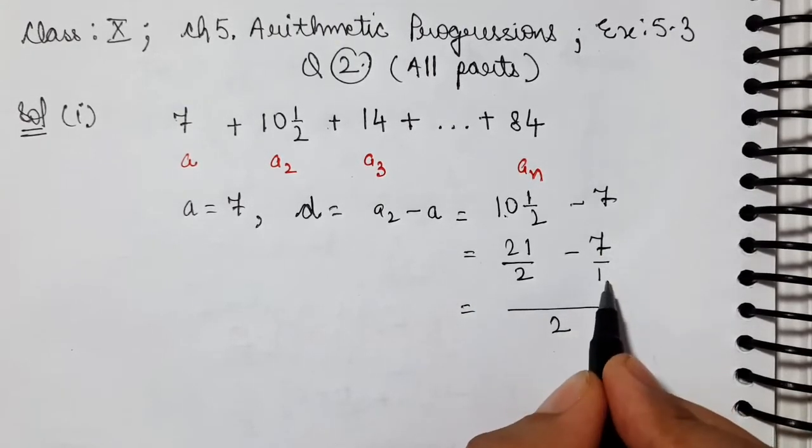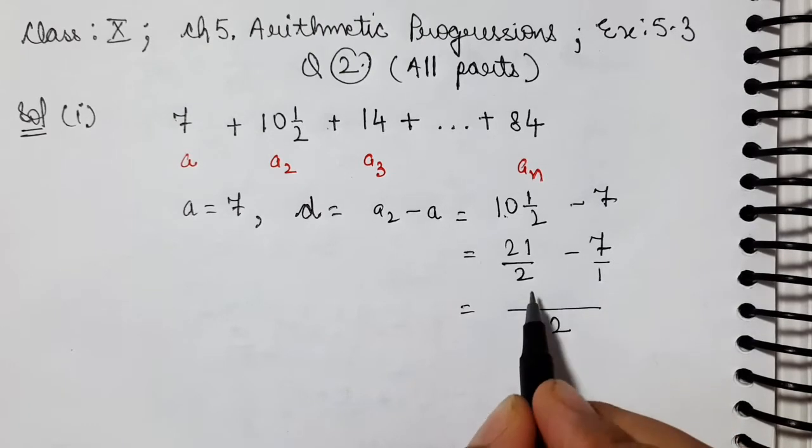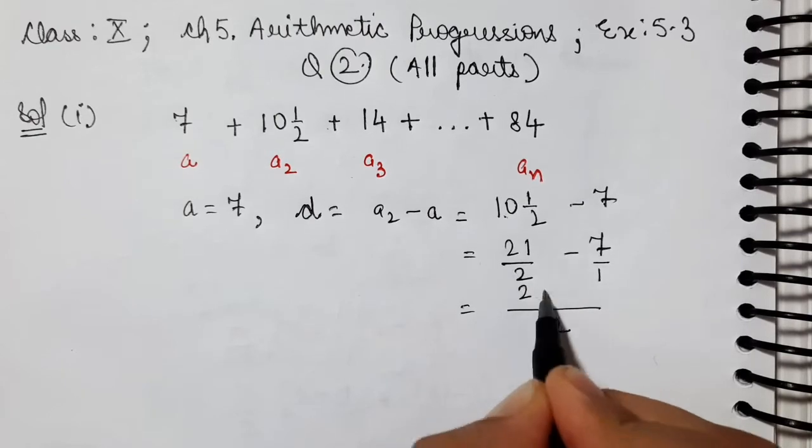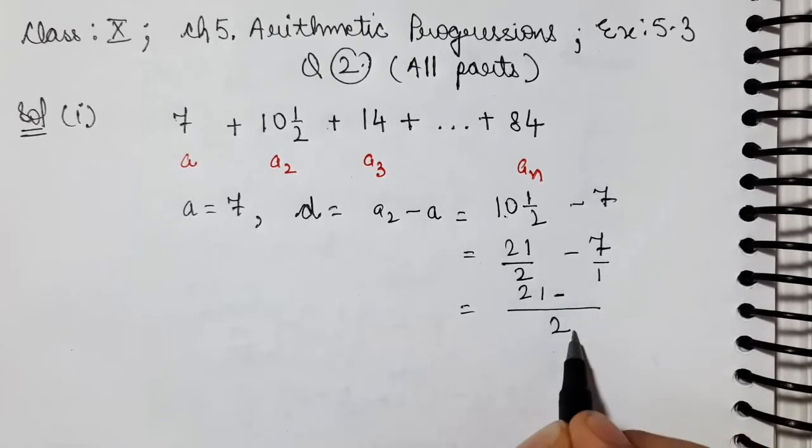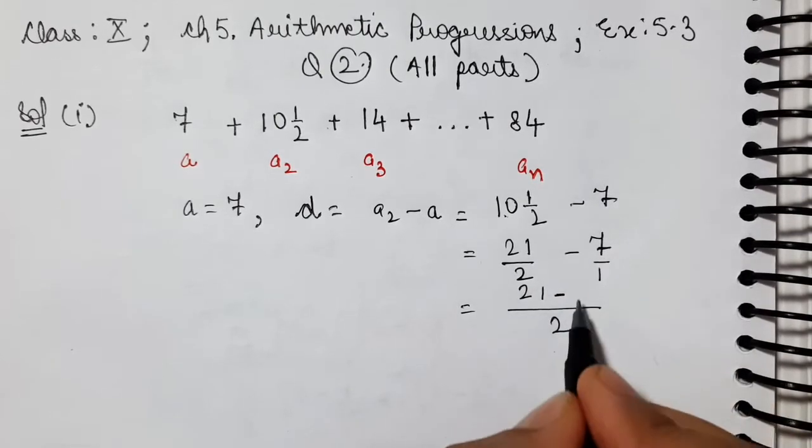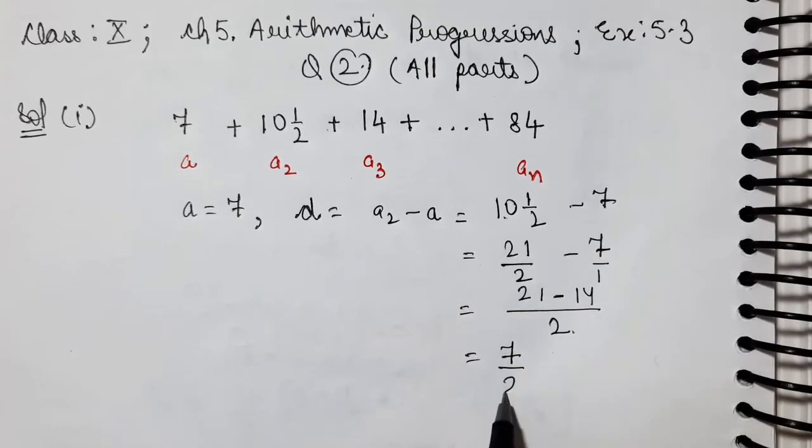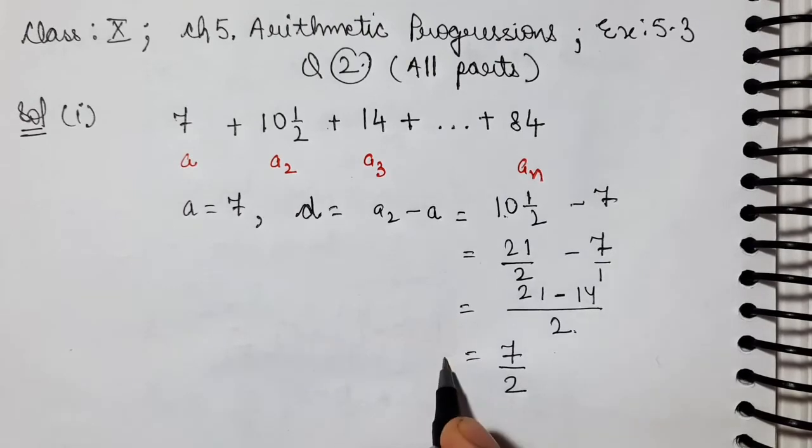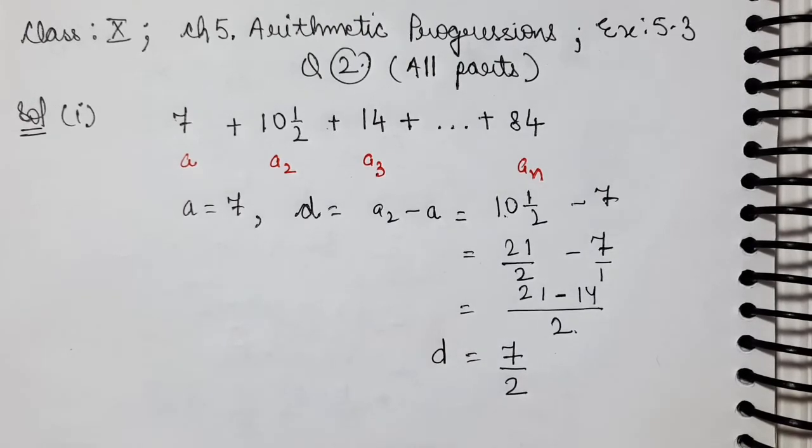So let's take this as the nth term. Now whatever is given, we'll write it here again. A is equal to 7, first term. d is equal to second term minus first term. That is, second term is 10½ minus 7. Let's convert the mixed fraction to simple form first. This is 2 into 10, 20, 20 plus 1, 21 by 2 minus 7.